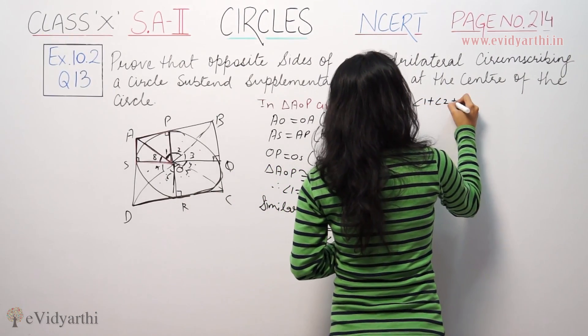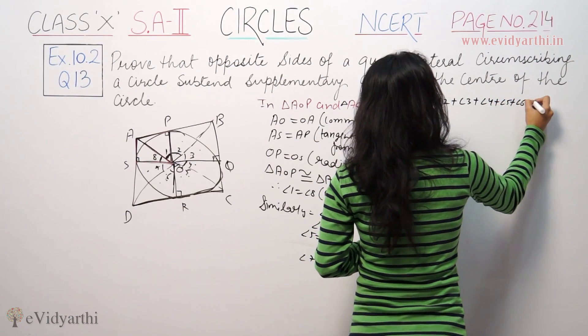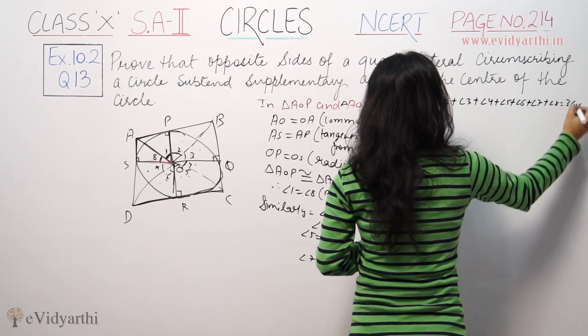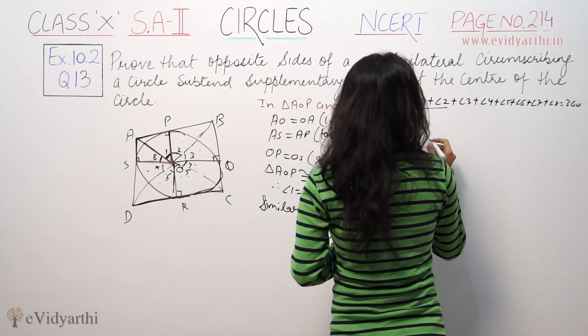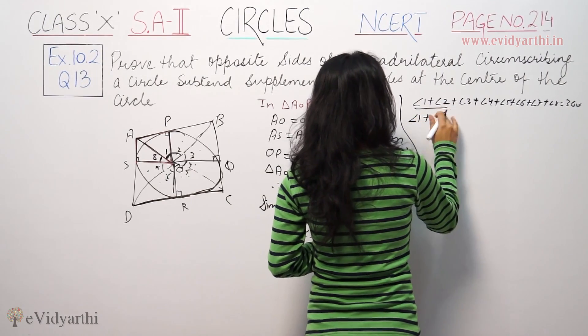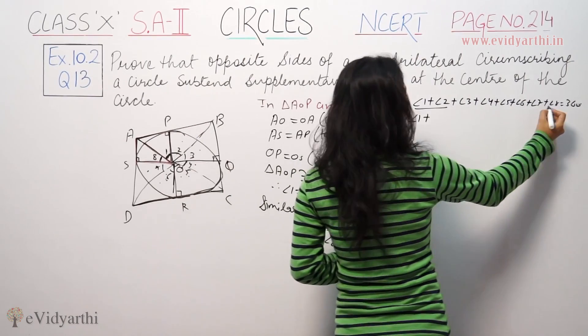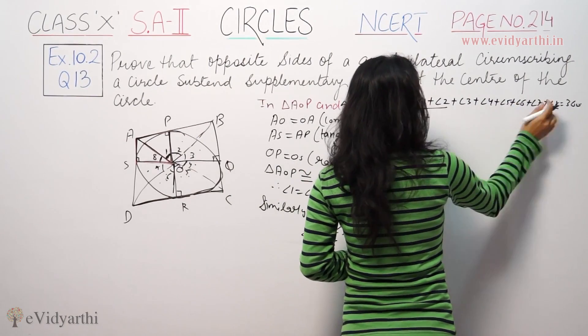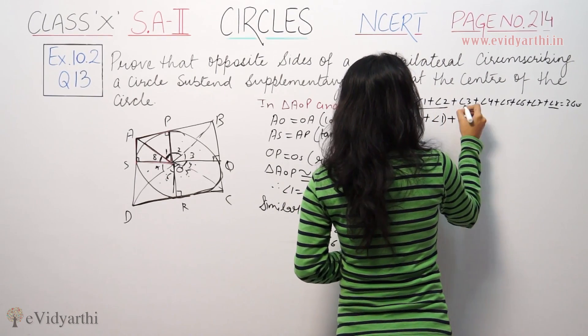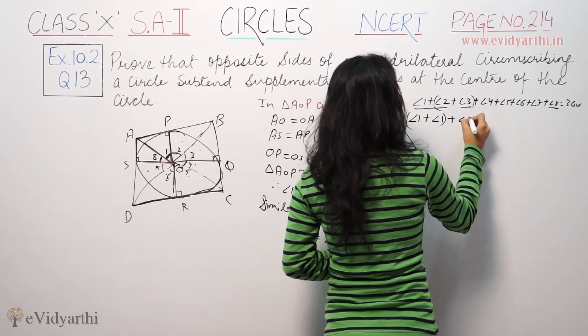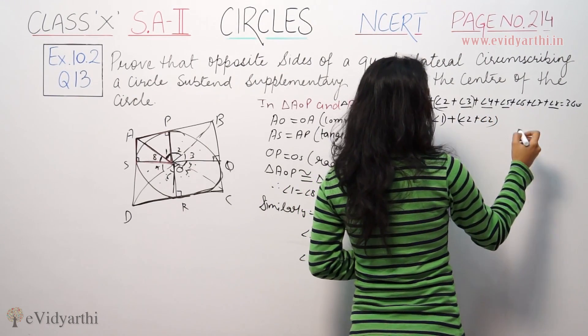Angle 1 plus angle 2 plus angle 3 plus angle 4 plus angle 5 plus angle 6 plus angle 7 plus angle 8 equals 360 degrees. Now angle 1 equals angle 8, so we can write angle 1 plus angle 1. Angle 2 equals angle 3, so we write angle 2 plus angle 2.